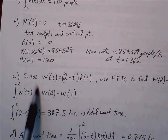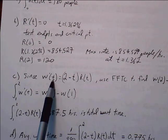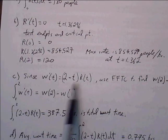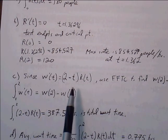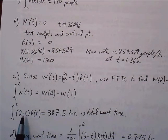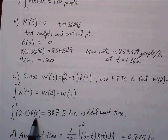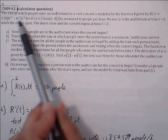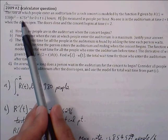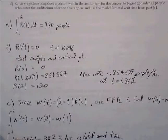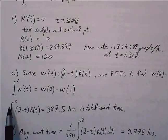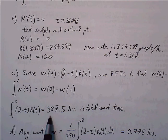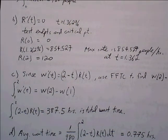We essentially just have to find the definite integral of W prime from 1 to 2. The definite integral from 1 to 2 of 2 minus T times R of T. R of T is given to us at the beginning of the problem here - 1380 T squared minus 675 T cubed. We enter this in our calculator and that tells us that the total wait time for everybody is going to be 387.5 hours.